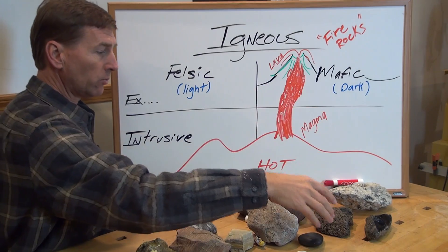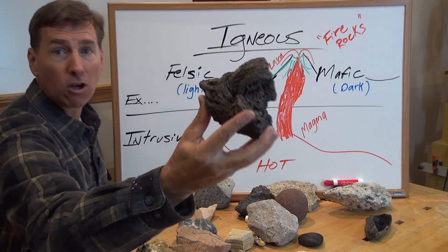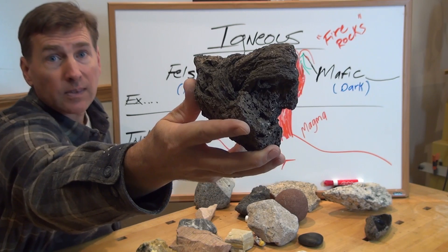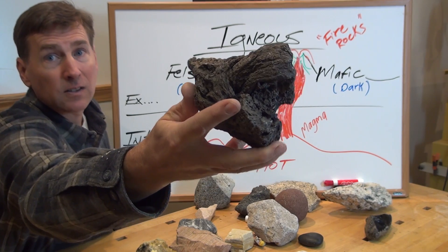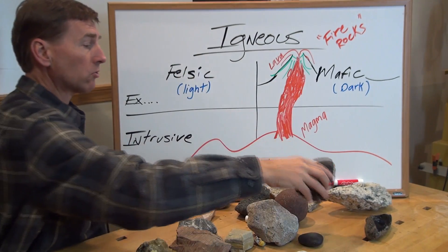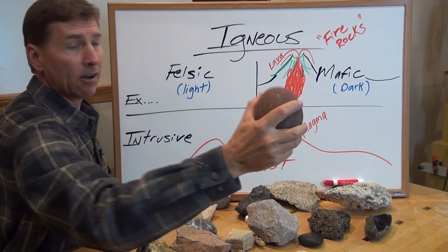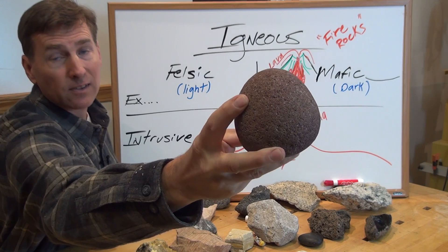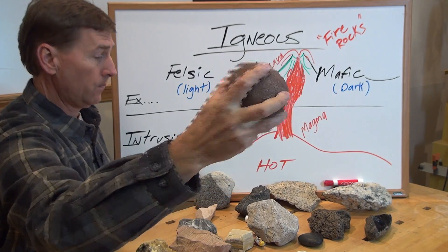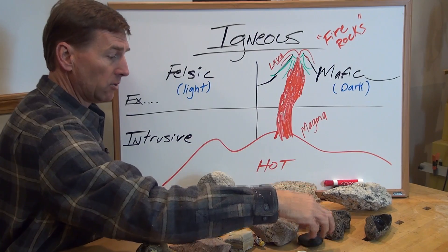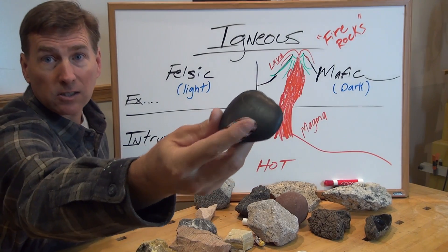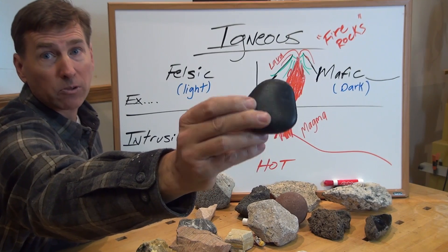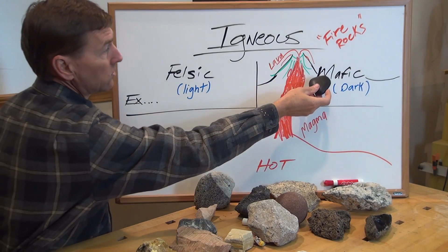If we move over further, we get into our classic basalt. You'd find this in Hawaii. You can see the ropey-ness of it. If this happens to go into a stream, I love it when they are rounded out. Look at how rounded this one is and how red it looks — this is also a basalt. I have another one here that's very dark colored, found in the streams of Northern California. Also a basalt — dark colored, mafic.